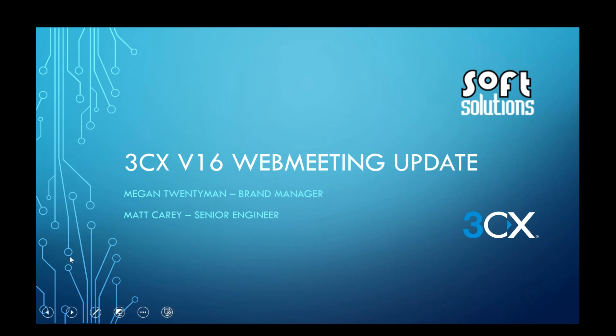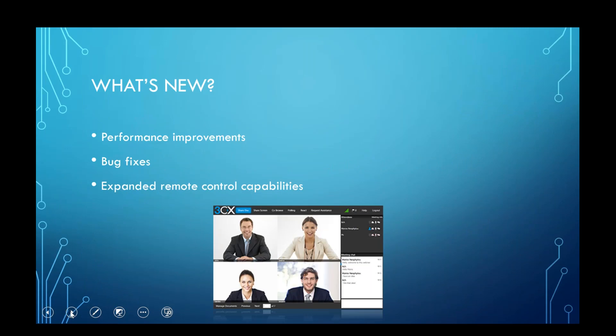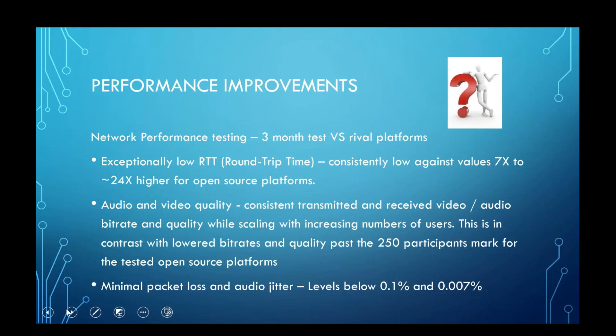So what's new? A little while ago 3CX introduced more nodes in Australia, with the broader idea to increase reliability and reduce latency around the world. Initially when WebMeeting was released a lot of people were seeing high latency, which was especially noticeable in New Zealand. Now with version 16 update 2 we've seen further performance improvements, some new bug fixes, and some really cool remote control functionality — so in lieu of using something like TeamViewer or typical support software, that is now coming into 3CX as well.